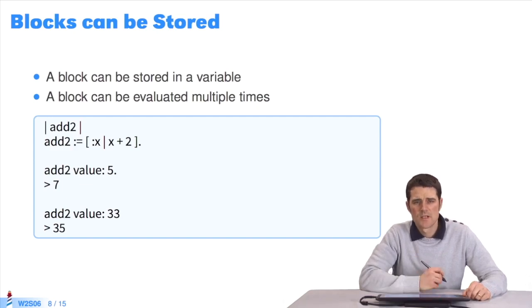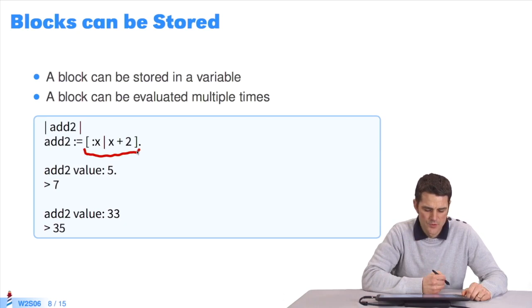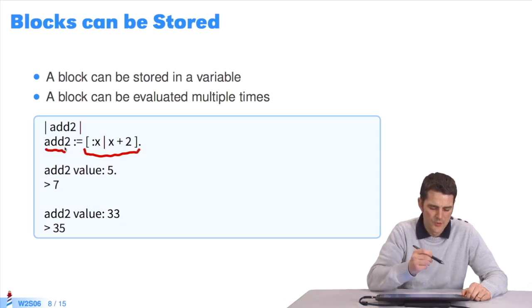Blocks are normal objects in Pharo. They can be stored in temporary variables. They can be sent messages like normal objects. This is the example I have for you here. You can store the definition of this block, x plus 2, in a variable called add2.